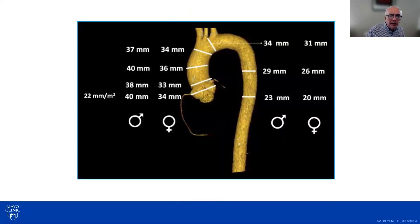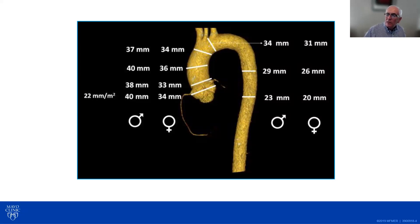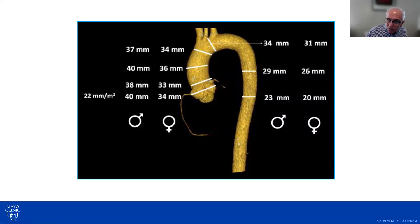There are normal values for the size of each aortic segment, derived from studying many normal individuals, both men and women. There are tables of normal aortic sizes by age, sex, and body surface area. In this example, you can see that there are characteristic areas where the aorta is measured: aortic root, ascending aorta, aortic arch, and descending aorta. The values for men and women are slightly different — slightly smaller for women than for men — and can be further refined by considering body surface area and age.